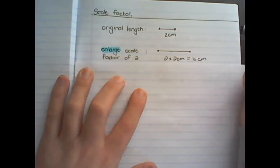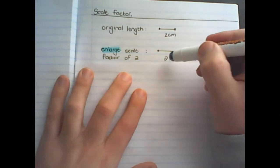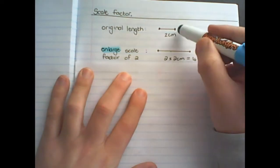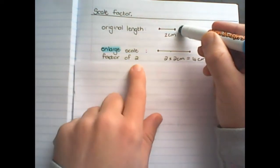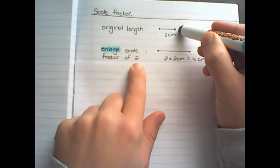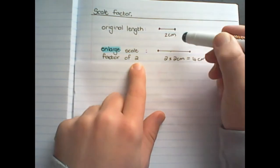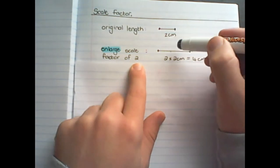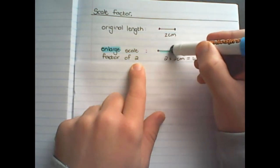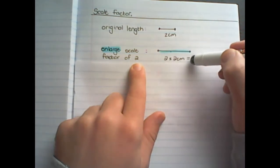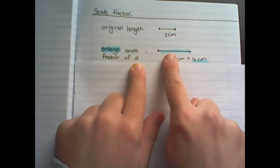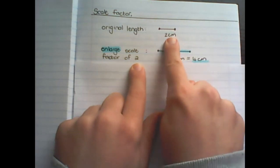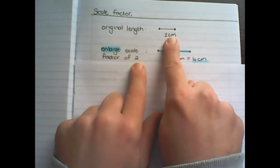I would then multiply the original length by the value of the scale factor. So the enlarged length would be four centimeters, because I multiply the original length by two.